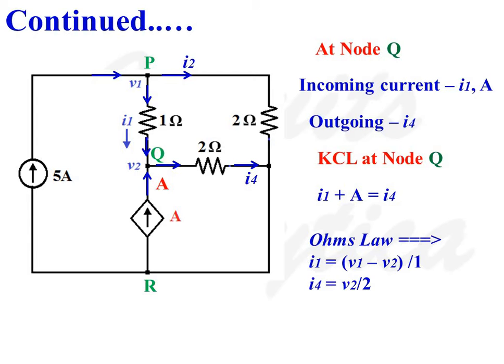There are three currents associated with node Q. Out of these three currents, two are incoming and one is outgoing. The incoming currents are I1 and A, and the lone outgoing current is I4. According to Ohm's law, I1 is equal to (V1 minus V2) divided by 1, and I4 is equal to V2 divided by 2.